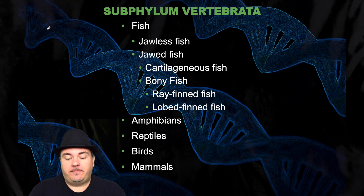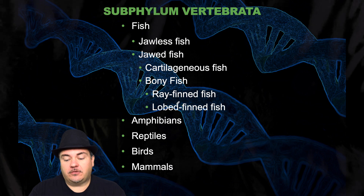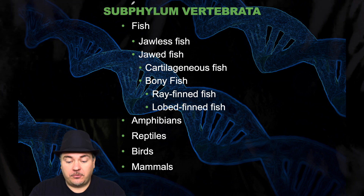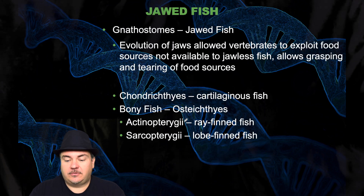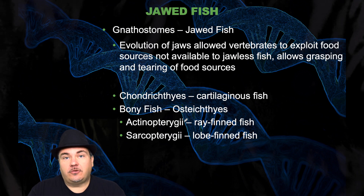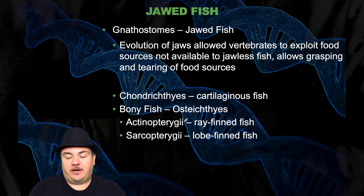Within the subphylum Vertebrata you have fish, of which there are different types: jawless fish, and jawed fish which includes cartilaginous fish and bony fish — which is either ray-finned or lobe-finned. Then you have amphibians, reptiles, birds, and mammals. We're going to go through each of these categories. Starting with the jawless fish — you have hagfish or lampreys. Then you have the jawed fish, called gnathostomes. The evolution of jaws allowed vertebrates to exploit food sources not available to jawless fish, allowing grasping and tearing of food.